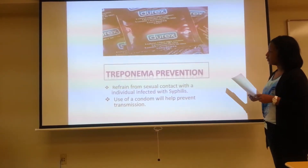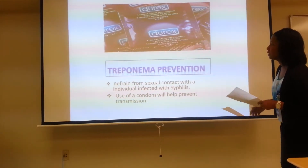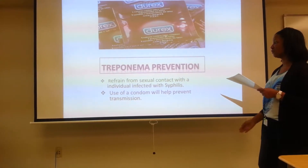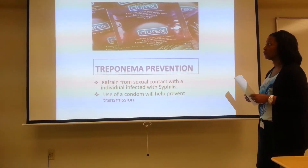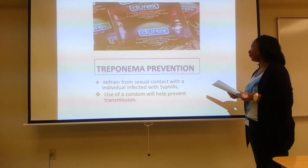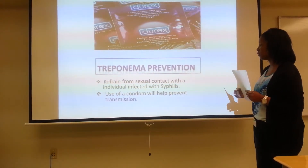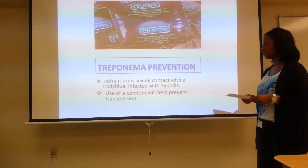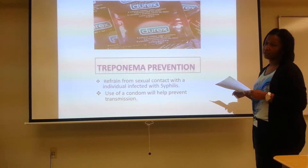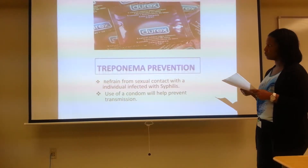For prevention of syphilis and Treponema, you should refrain from sexual contact — abstinence — with someone infected with syphilis, because it is highly transmittable. If you do have sexual contact with someone who has syphilis, you would want to be in a monogamous relationship and use a condom to help prevent transmission. However, a condom only helps prevent transmission; it does not guarantee you won't get the disease. Prevention is best achieved with abstinence.